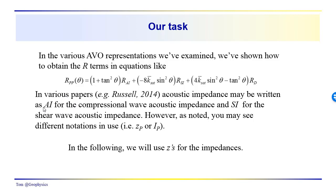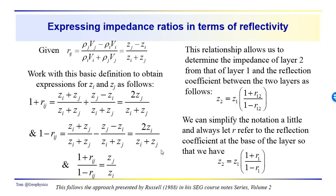AI, for example, is often used as acoustic impedance. When you see AI by itself, that's usually the compressional wave acoustic impedance, and SI would be the shear wave acoustic impedance. We should be able to derive these acoustic impedances from the reflection coefficients — that's our objective. In the following discussions, we're just going to use z's for the impedances, as in the recent slides.